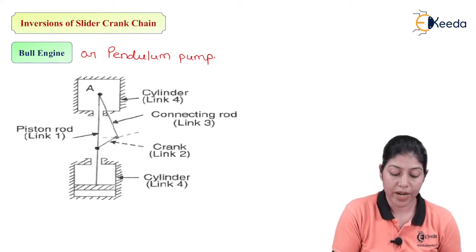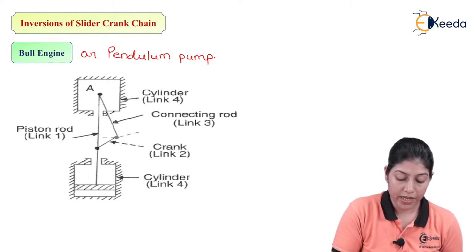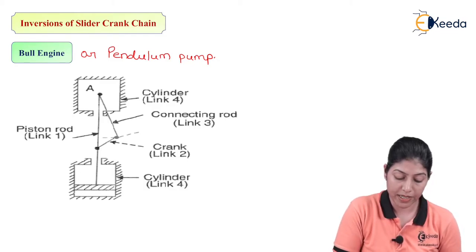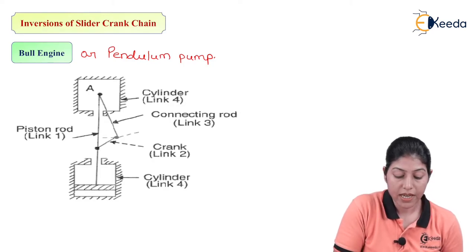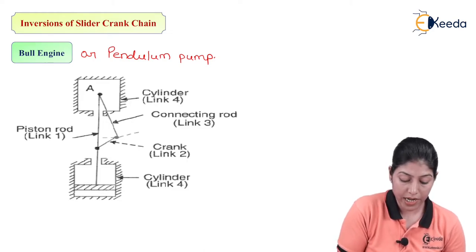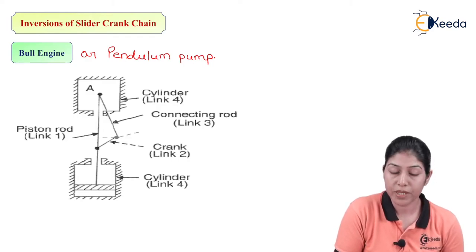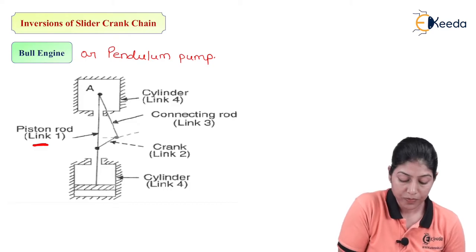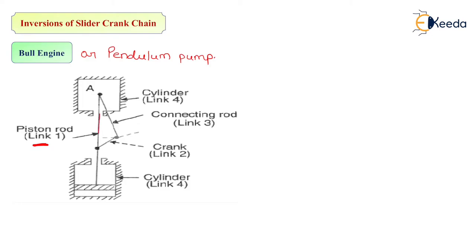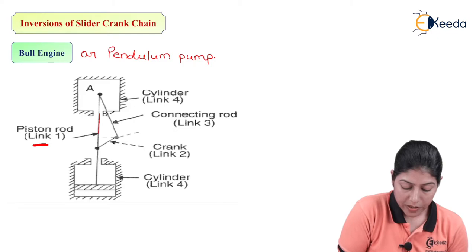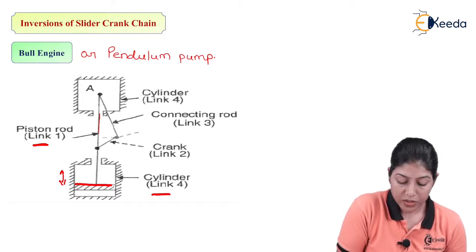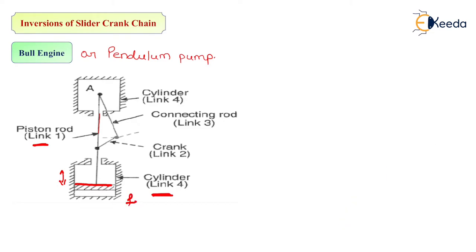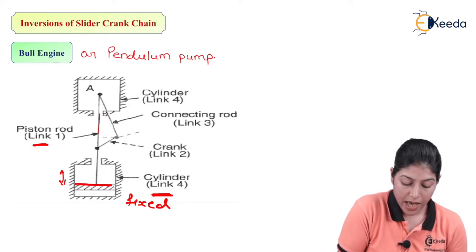This is the diagram of the pendulum pump, where we are considering two links which are fixed. We have 4 links: link 1 is the piston rod, link 2 is the crank, link 3 is the connecting rod, and link 4 is the cylinder. Here we are considering two cylinders connected with the piston rod and piston. The cylinder is considered as the fixed link (link 4), and the piston rod will move as per the motion of the crank.